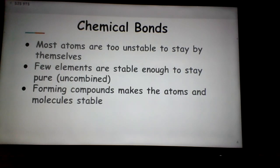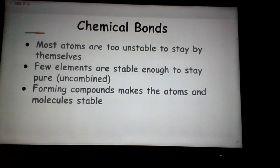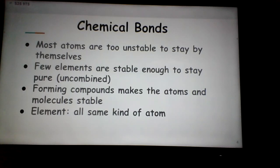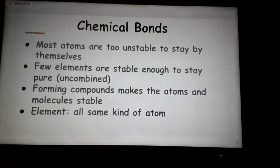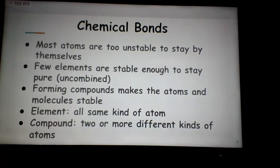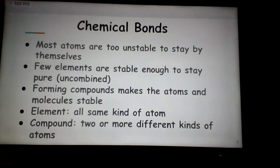For example, oxygen will end up with 8 valence electrons instead of the 6 it starts with. Many bonds include hydrogen, and hydrogen has only one energy level, so it is satisfied and stable with 2 valence electrons. An element is a sample of all the same kind of atoms — a chunk of gold has atoms all with 79 protons. A compound is when two or more elements come together. When chemical bonds happen, atoms turn into molecules and elements turn into compounds.